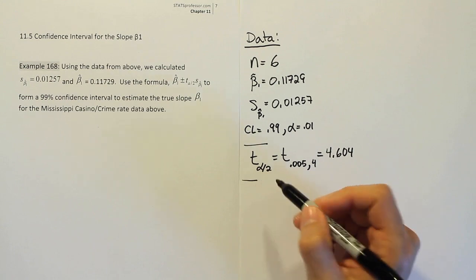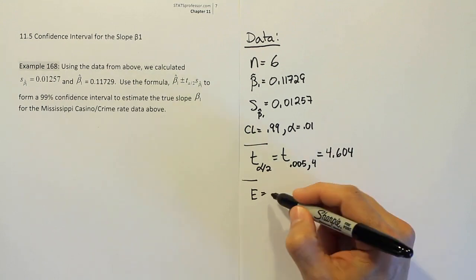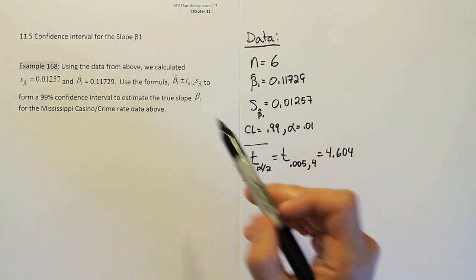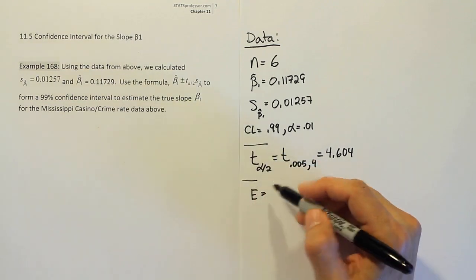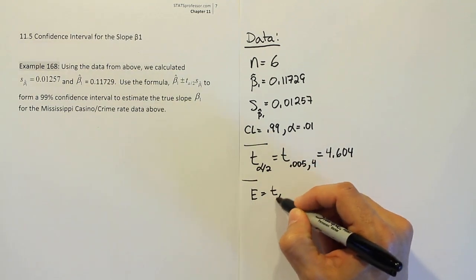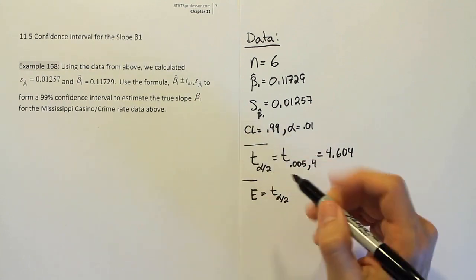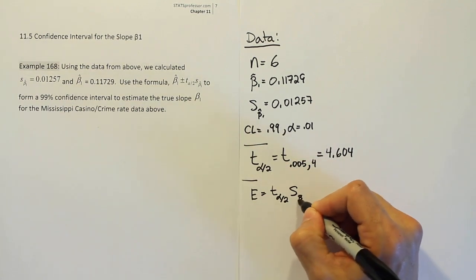Our next step is normally to get the margin of error. The margin of error is equal to, the formula here is actually given to us, so we don't have to do much. We just have to copy that down. It's t alpha divided by 2 times the standard error for beta 1 hat.